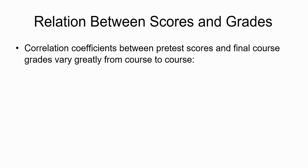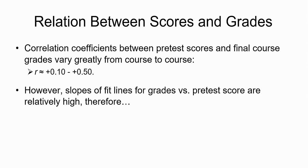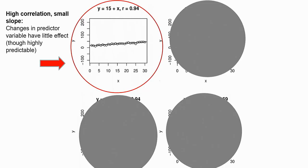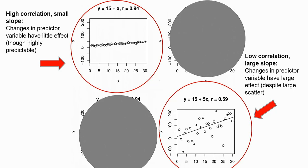In general, what we find is that there is a positive correlation between scores on those pre-instruction tests and final course grades. They vary a lot from course to course and are generally not very high correlations, but the slopes of the fit lines are relatively high, so you do get predictability. I'm focusing on top and bottom quartiles, leaving the middle out of the discussion.